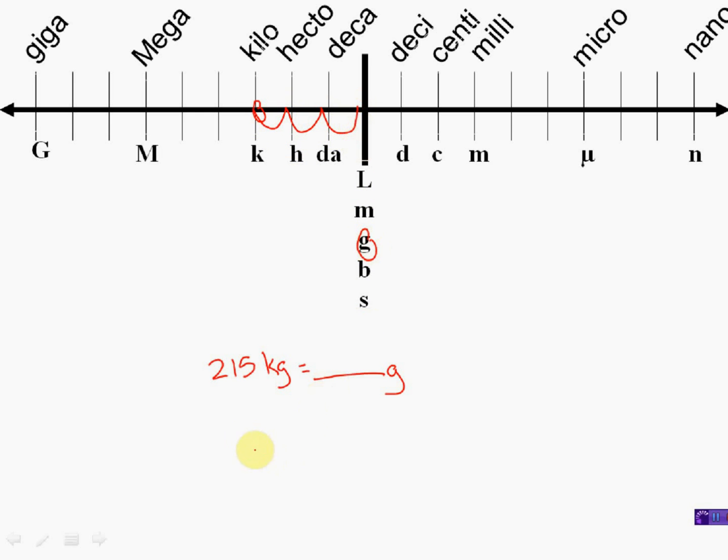So I need to take my decimal point and now go 215 and now go one, two, three. One, two, three places over. And that ends up being 215,000 grams. Pretty easy.